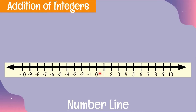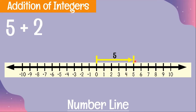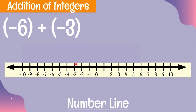Example 1: 5 plus 2. Let's always start at zero in the middle. Using a yellow arrow, since we have positive 5, we move 5 units to the right. Since we have positive 2, we move an additional 2 units to the right. Therefore, 5 plus 2 is equal to 7.